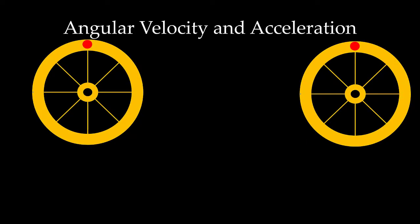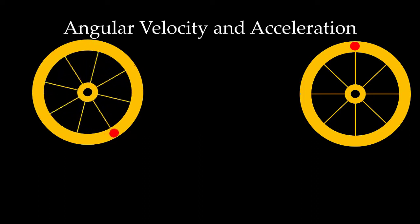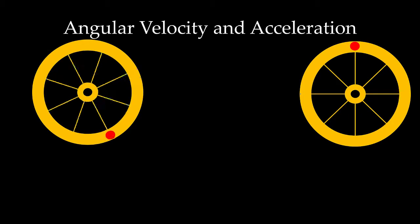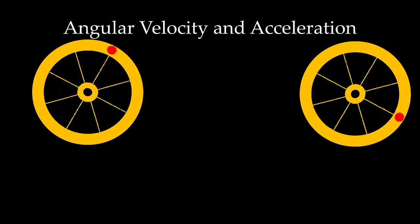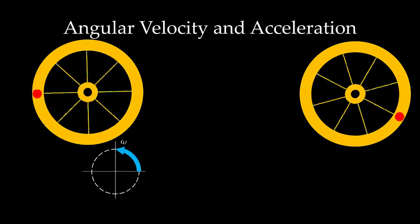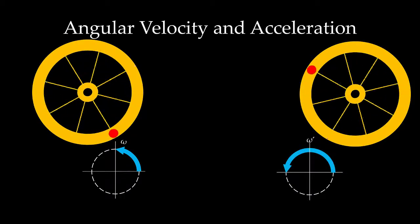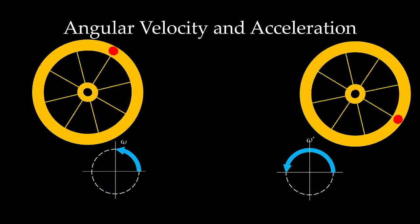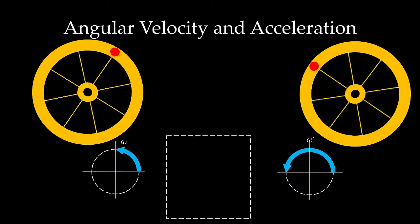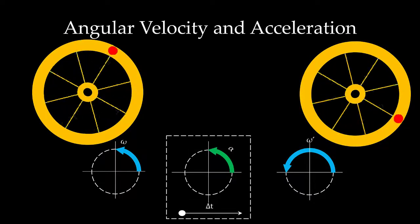Now let's look at some vector diagrams and look at a wheel as an example of angular velocity and angular acceleration. If a wheel was moving with a certain angular velocity — in this case moving in the counterclockwise or positive direction — at some point in time later it starts to speed up. This means its angular velocity increases. If we have a change in our angular velocity, we had to have had an angular acceleration, and if things are speeding up, that angular acceleration has to be in the direction of the angular velocity vector.